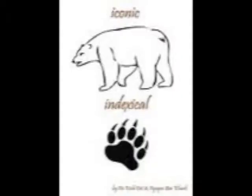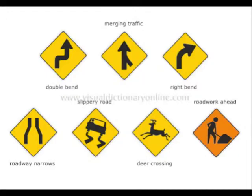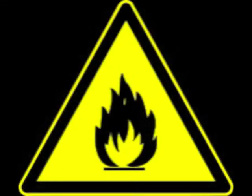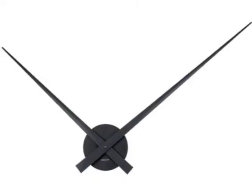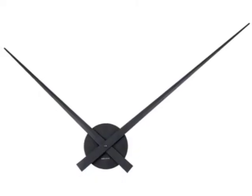Indexical signs create a strong reference to the signified object. This is done not by similarity but by an actual linking of the sign and its object. The hands on a clock would be an index of the current time.